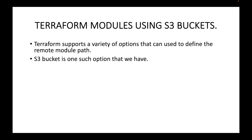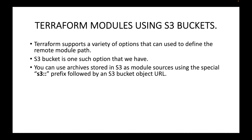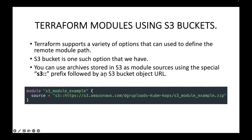You can use archives stored in an S3 bucket as module sources using the special `s3::` prefix followed by an S3 bucket object URL. This will be the syntax or the format you need to provide for the S3 bucket source, so make sure you are giving the right path.